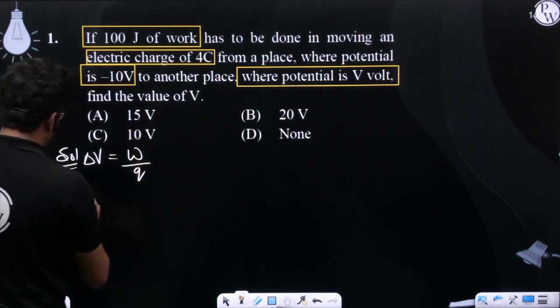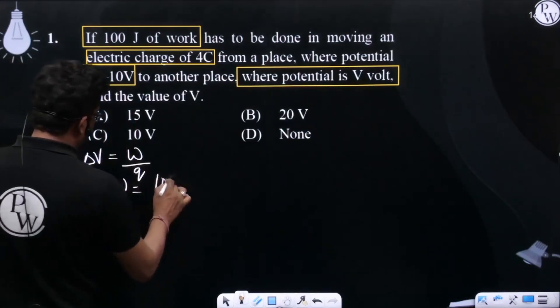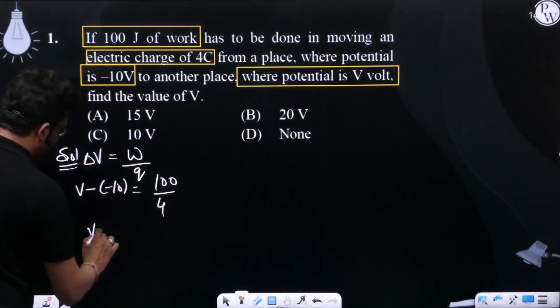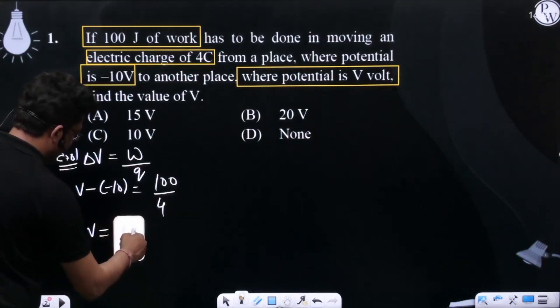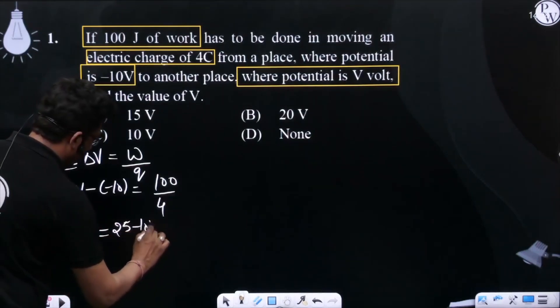Now V final minus V initial is equals to 100 divided by 4 coulomb. So, V is 25 minus 10 volt, right? V equals 15 volt.